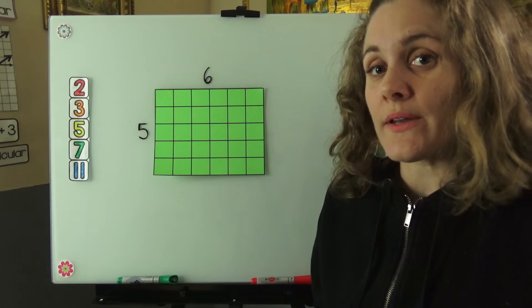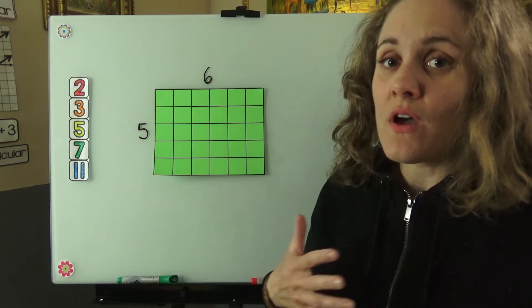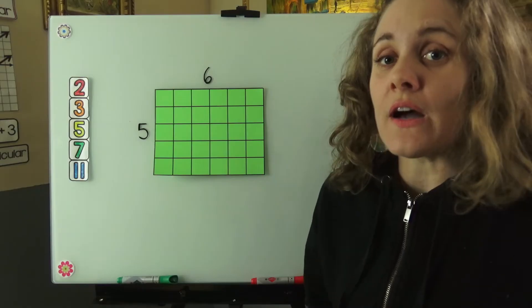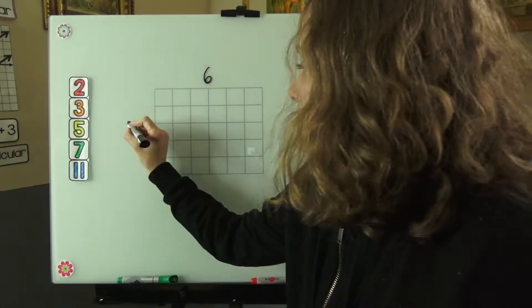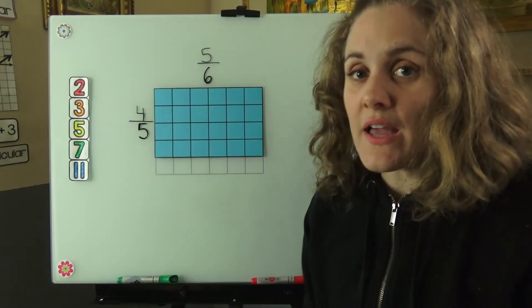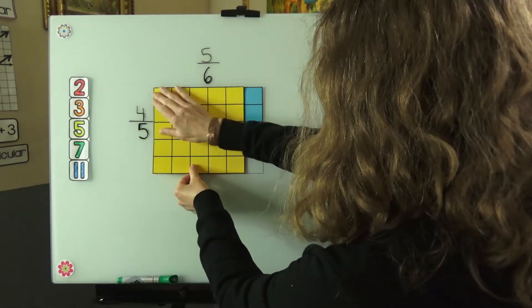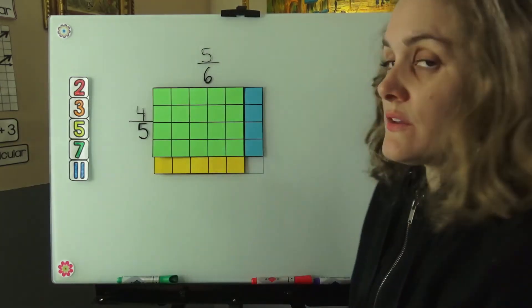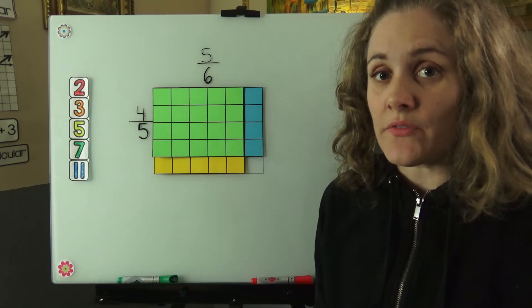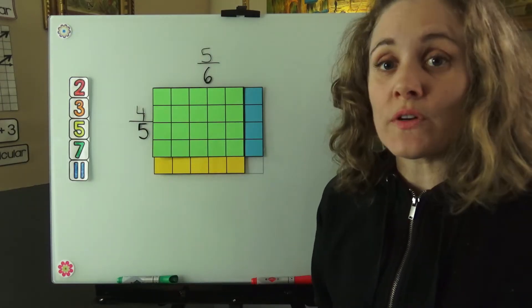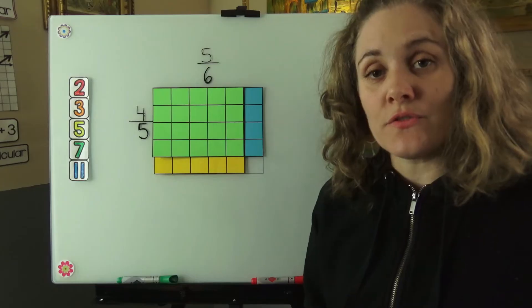So what if we have those numerators back in? What if we don't have a full 5 times a full 6? What if we only have part of the 5 times part of the 6? Here we have 4 of the 5 rows times 5 of the 6 columns. That overlapping area will be this green piece. So instead of the entire area being covered in green, we only have this smaller area covered in green. That's our overlapping area. That's the product of our two fractions.